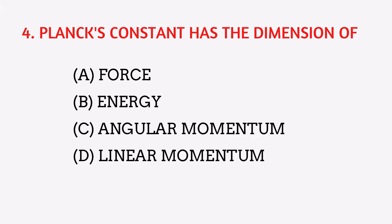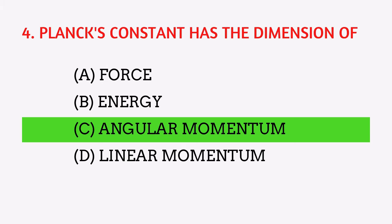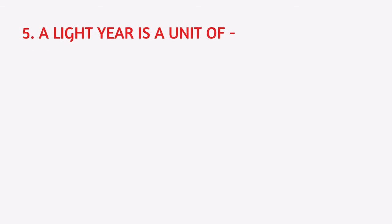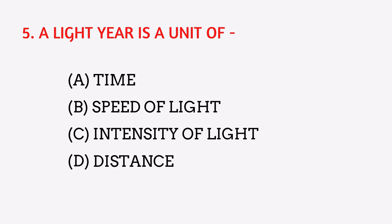Planck's constant has the same dimension as what? The answer is angular momentum. The unit of Planck's constant is joule-second, and its dimension is ML² T⁻¹. Planck's constant is equal in dimension to angular momentum, which is also ML² T⁻¹.